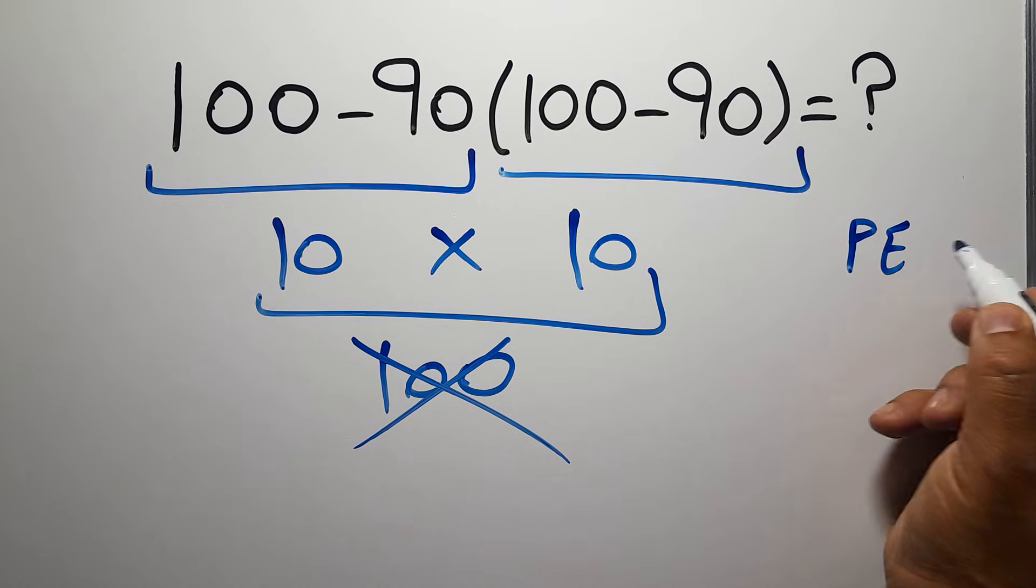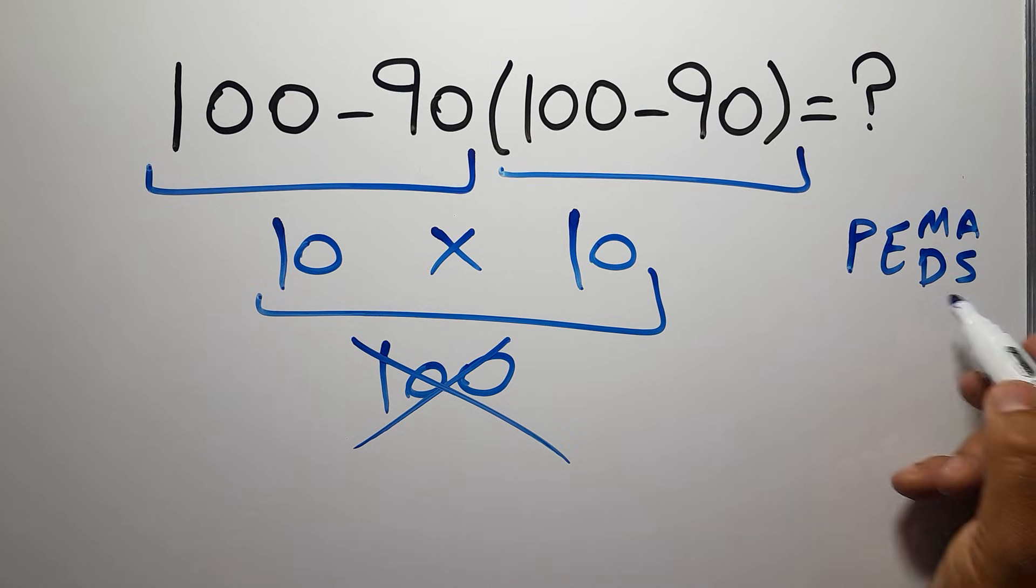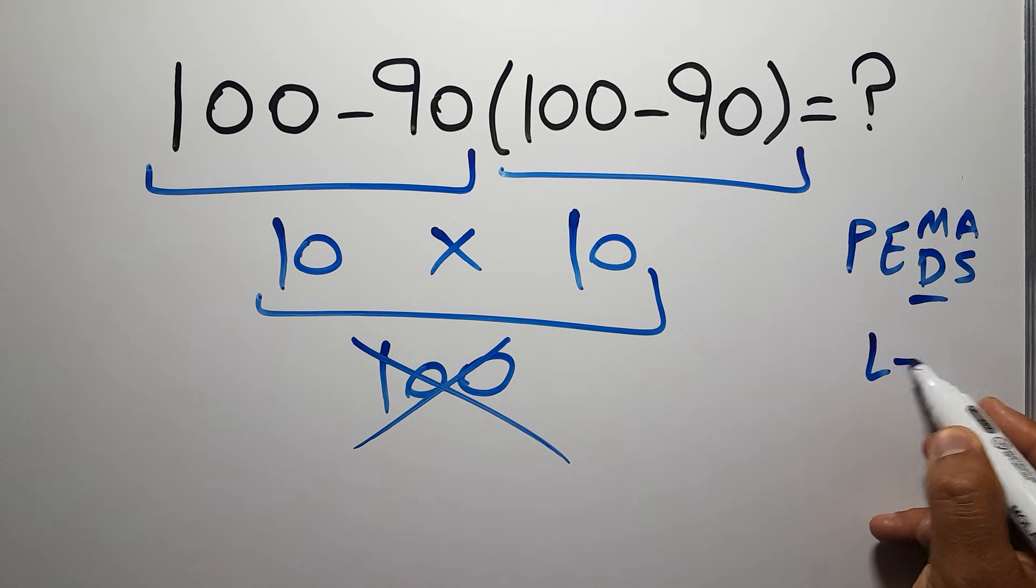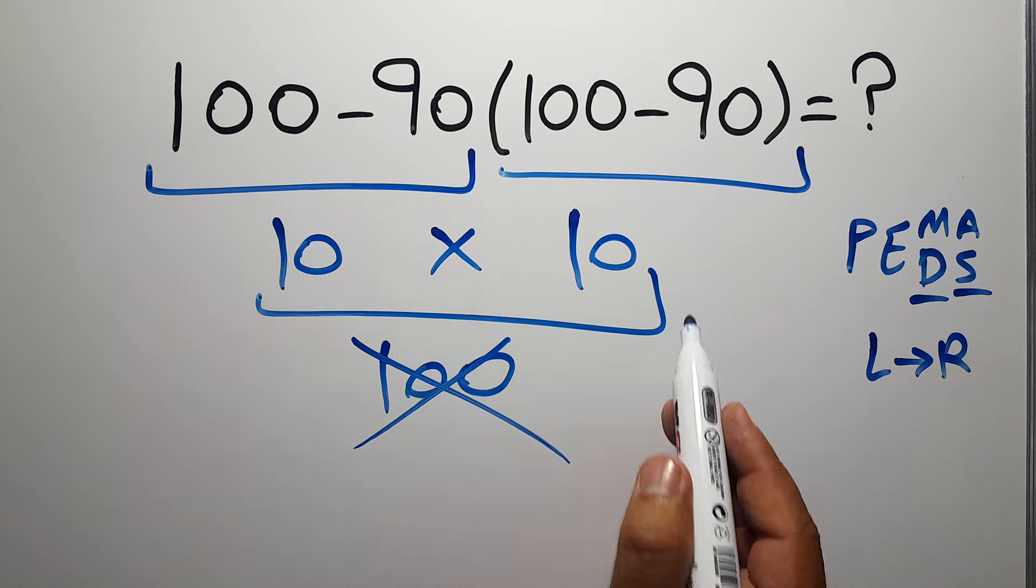Then exponents, then multiplication or division, and finally addition or subtraction. Remember that multiplication and division have equal priority, and we have to work from left to right. The same applies to addition and subtraction.